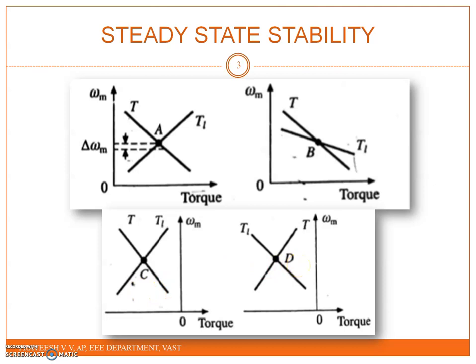The above analysis suggests that an equilibrium point will be stable when an increase in speed causes the load torque to exceed the motor torque. When at the equilibrium point, the following condition must be satisfied: the change in load torque must be greater than the change in motor torque.